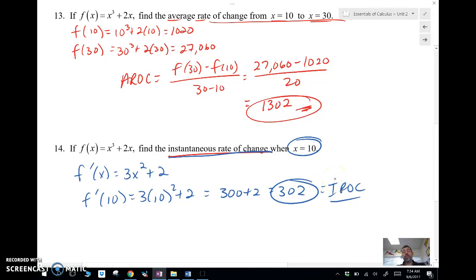So IROC, AROC—there's average rate of change, there's instantaneous rate of change. Remember that in average rate of change, you have two points and you're finding the slope between those. And the instantaneous rate of change, you just find the derivative and plug in a value.